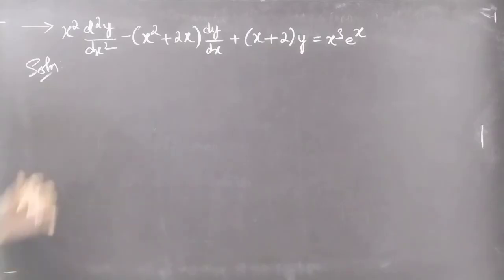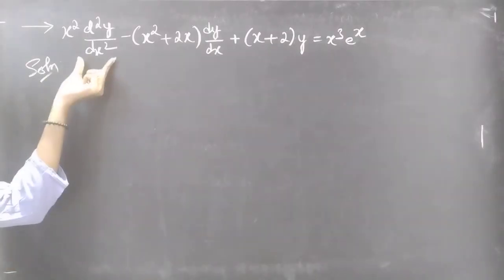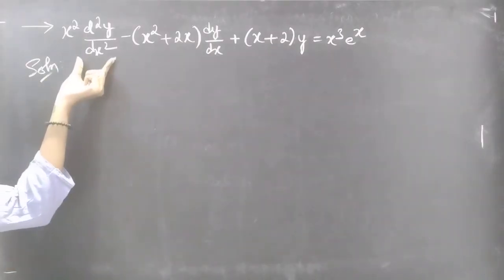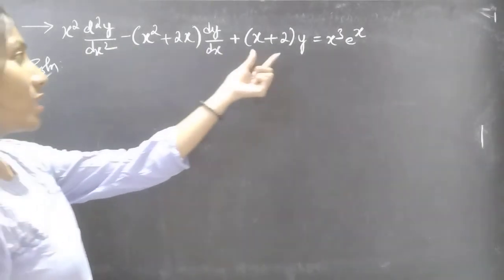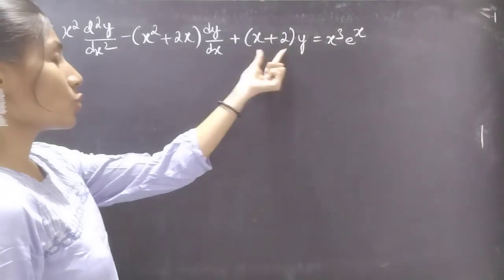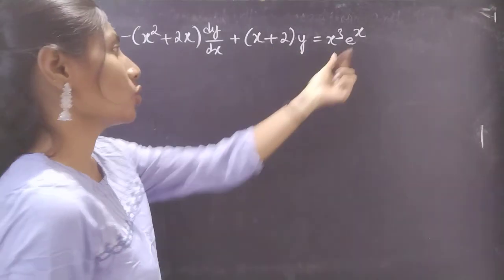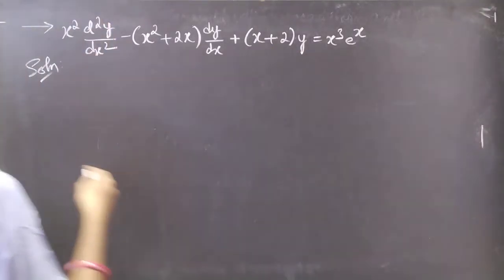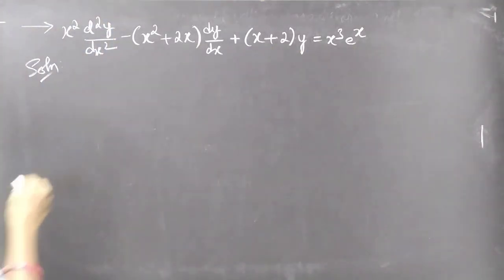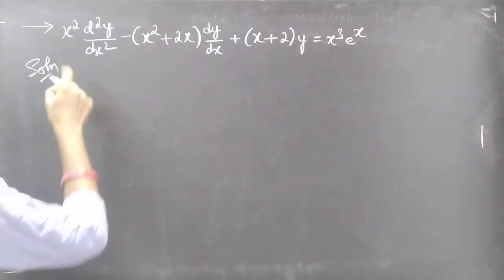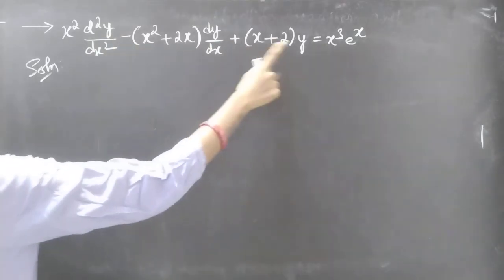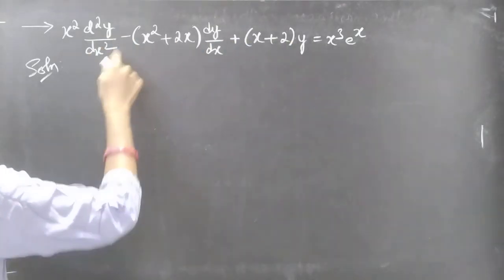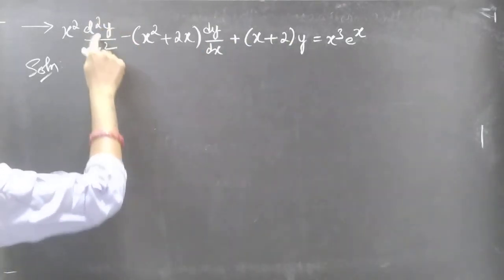Problem: Solve x squared times d²y/dx² minus (x squared plus 2x) times dy/dx plus (x plus 2) times y equals x cubed e to the power x. We are given a differential equation with variable coefficients and it is of order 2.